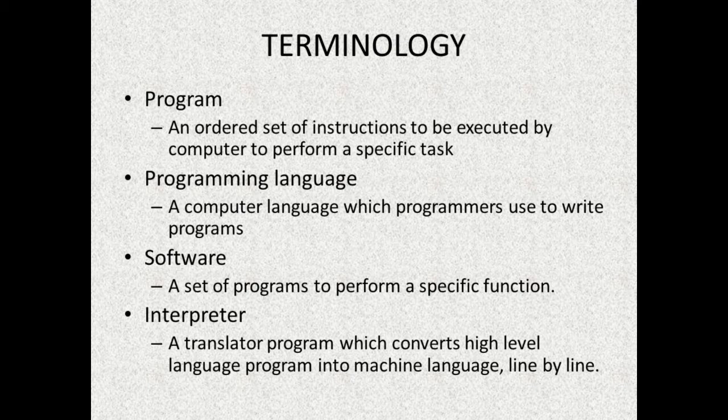High-level language is close to English, so it is easy for human beings to learn. Examples include C, C++, Java — these are all high-level languages, and Python is also a high-level language. Since programmers use high-level languages but computers only understand machine language, we need some translator software to convert high-level language to machine language and vice versa. Such software are called translator programs, and for high-level languages there are two types: interpreter and compiler.